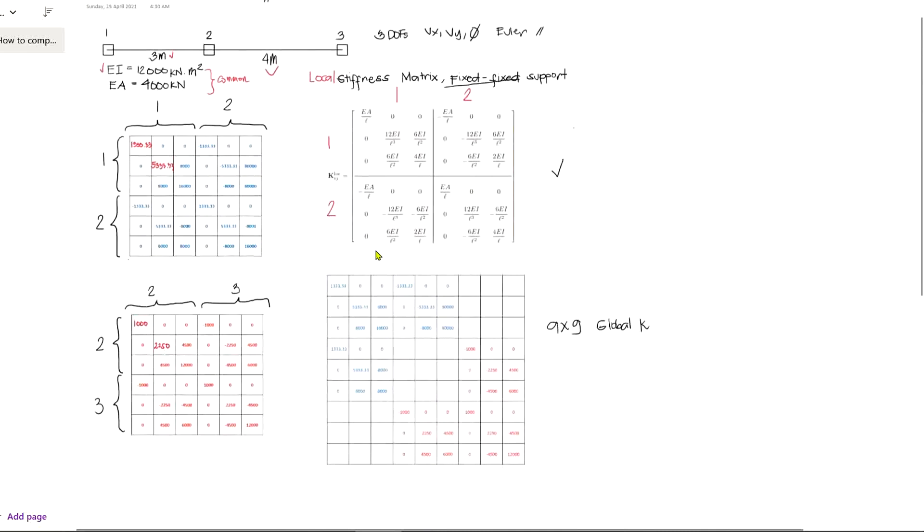Now you do the same for other entries. Just be careful of the signs and you should get the same values. Here comes the most important part, which is how to compile these local stiffness matrices that we just computed to global stiffness matrix. The key is to determine the entries where these two elements are connected. Well, definitely node 2 connects the two elements, but to be more specific, this two-two block here in the local stiffness matrix connects the two elements.